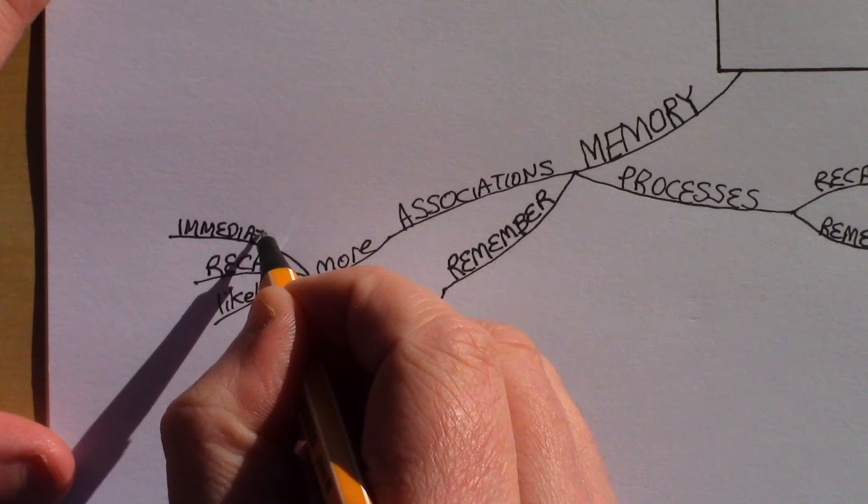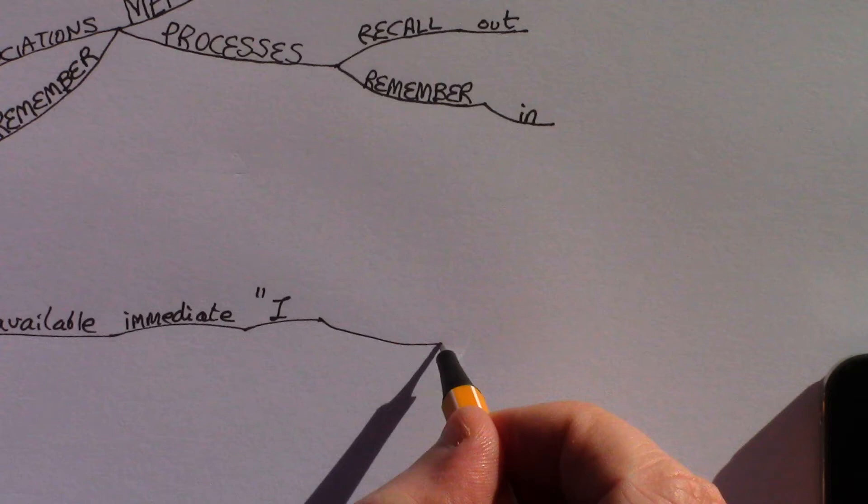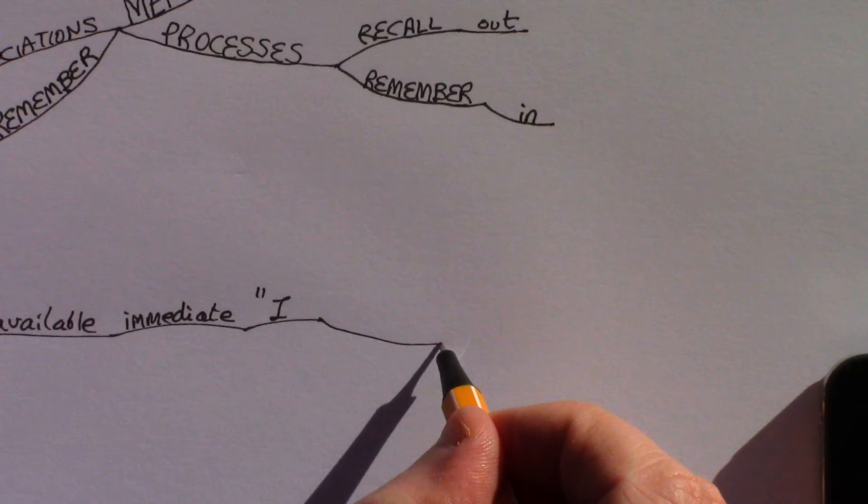And naturally, if you don't use a piece of information for a while, eventually that information will no longer be available for immediate recall. Thus, we now realize a memory is either available for immediate recall - and we've said we can remember it - or it wasn't, and in the past we've said we'd forgotten it.